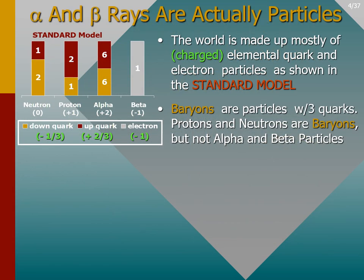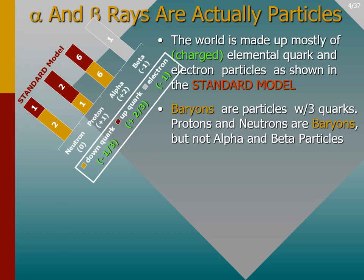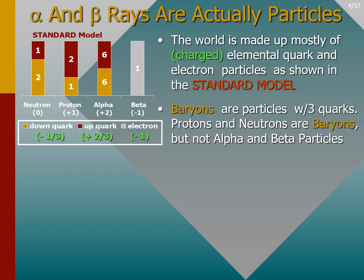Alpha and beta rays are actually particles — this was not known when Rutherford first discovered and named them. A chart of particle construction is shown on the left, based on the best predictive model we have today.